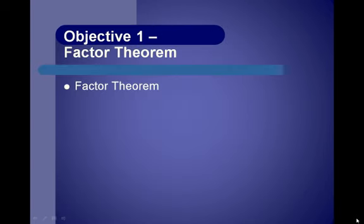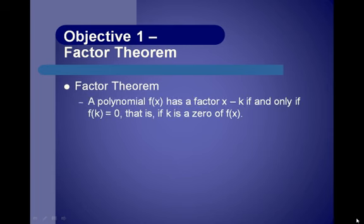Objective 1 is the Factor Theorem. The Factor Theorem says a polynomial f of x has a factor x minus k if and only if f of k equals 0 — that is, if k is a zero of f of x.